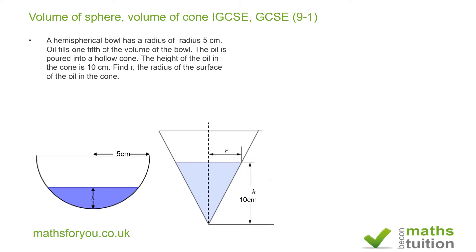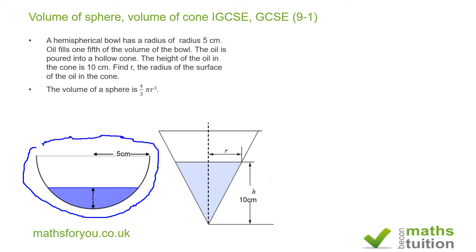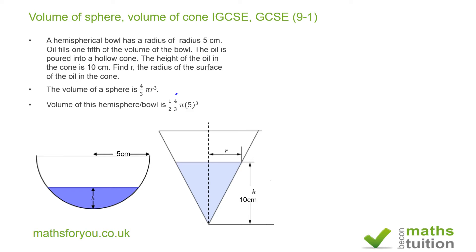You should remember, or they'll give it to you, that the volume of a sphere is four-thirds π r cubed, where r is the radius. In this case r is five. Because the bowl is only half of a sphere, the volume of this bowl is going to be one-half of four-thirds π r cubed. This five is the radius of the bowl.